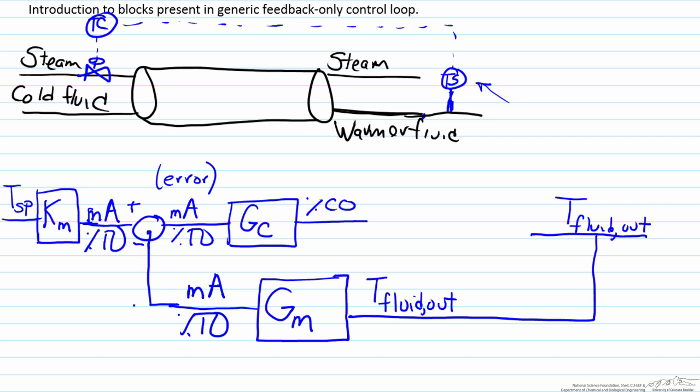If we then follow the signal there, the controller then sends its signal to the valve, which is represented by GV. What will come out of the valve transfer function in this case will be the flow rate of steam. But in all situations what will typically come out of the valve transfer function is the value of the manipulated variable, which in almost all cases is the flow rate.